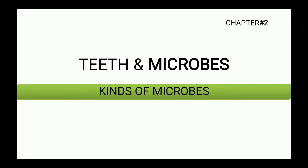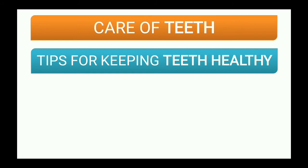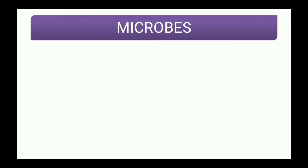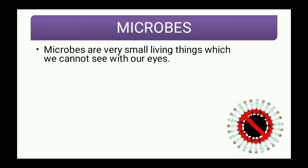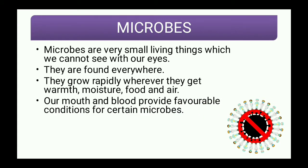Today we are going to learn kinds of microbes. This is part four of the lesson. I hope you remember what we studied in the last session — we had studied about care of teeth, tips for keeping teeth healthy, and we had learned a few things about microbes. Microbes are very small living things which we cannot see with our eyes. They are found everywhere and they grow rapidly wherever they get warmth, moisture, food and air. Our mouth and blood provide favorable conditions for certain microbes.